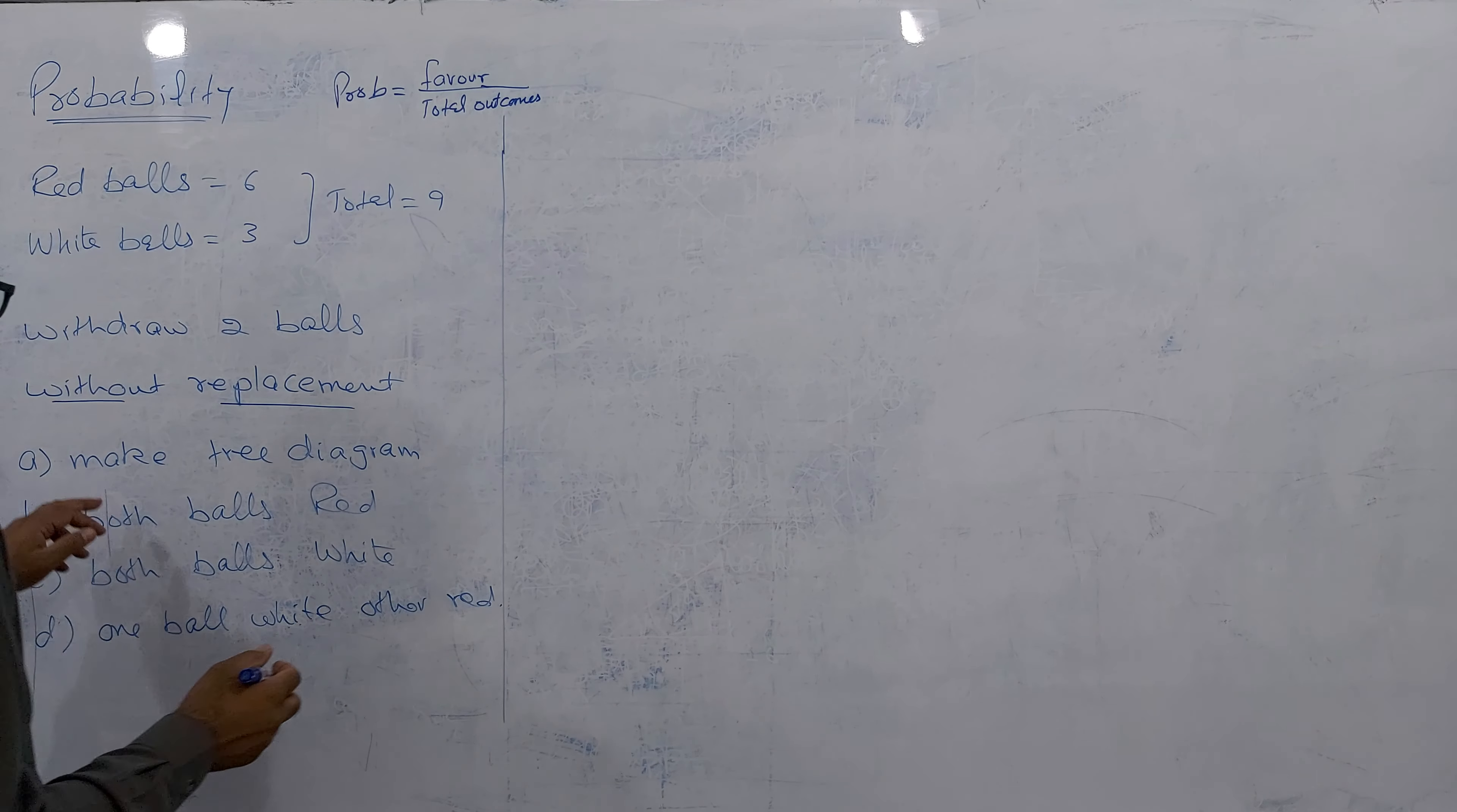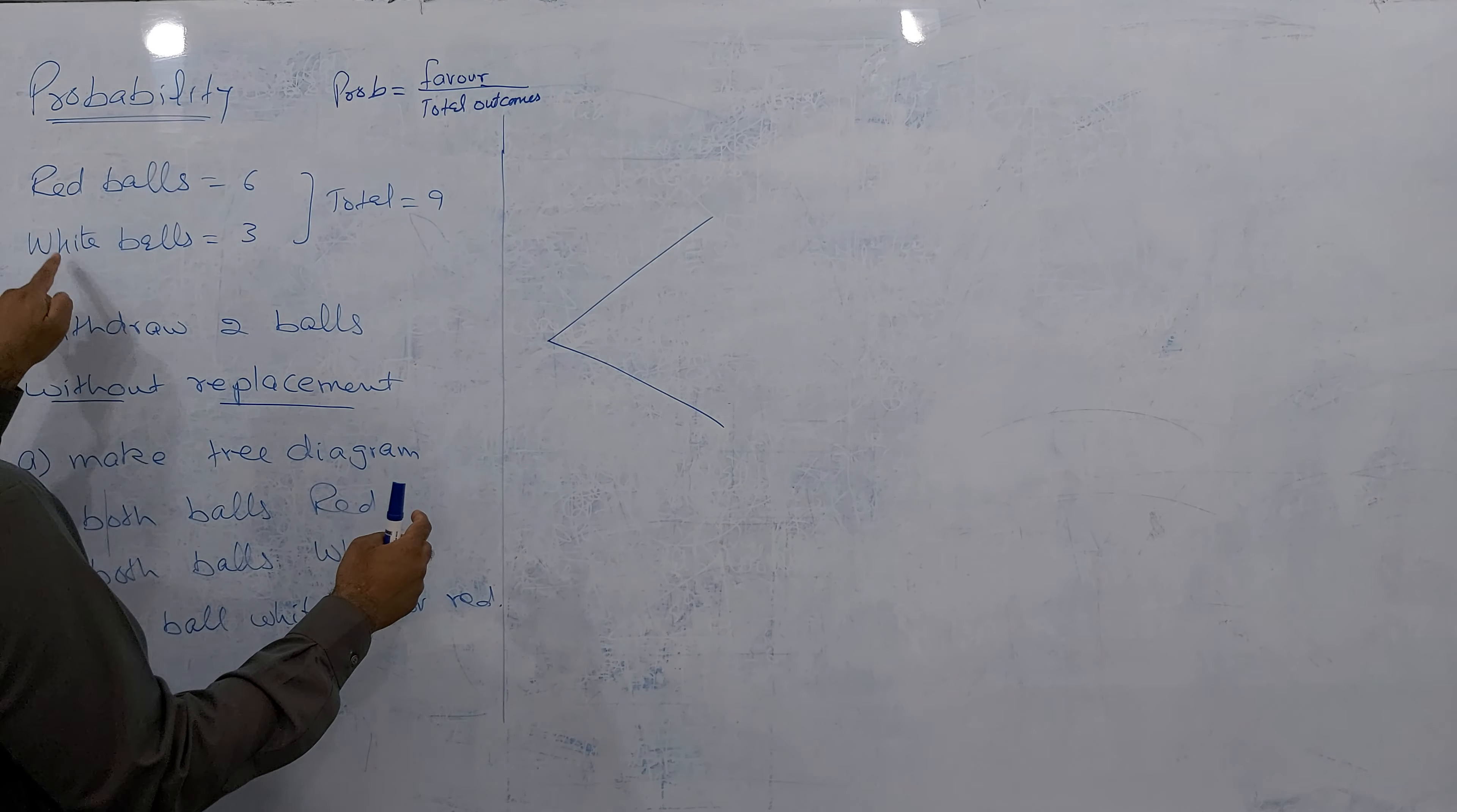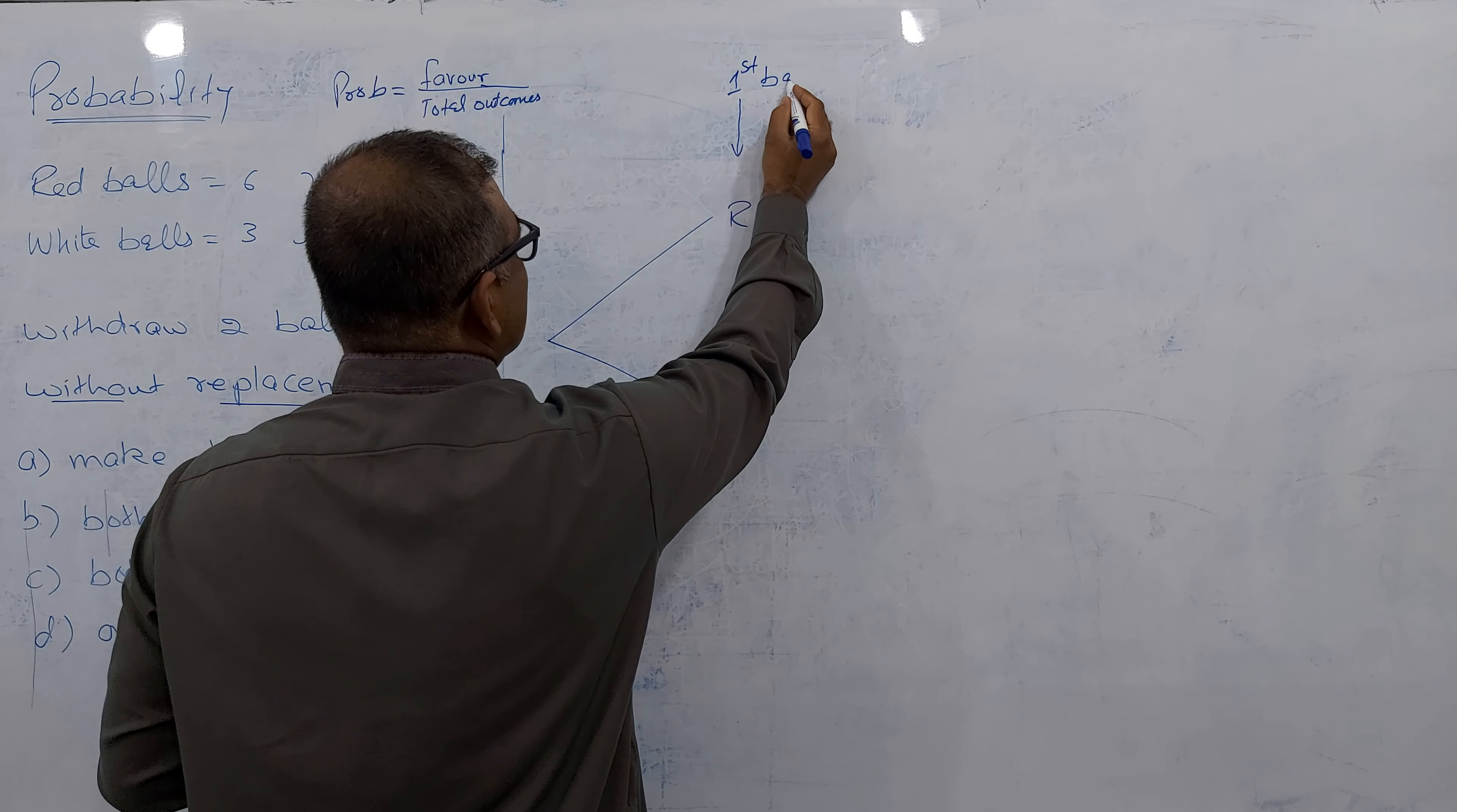I'll just show an example, a part matrix diagram. This is called chances. When I withdraw from the bag, there are two chances: either red will come out or white. Red and white, shortcut R and W. This is called first withdrawal, first ball.